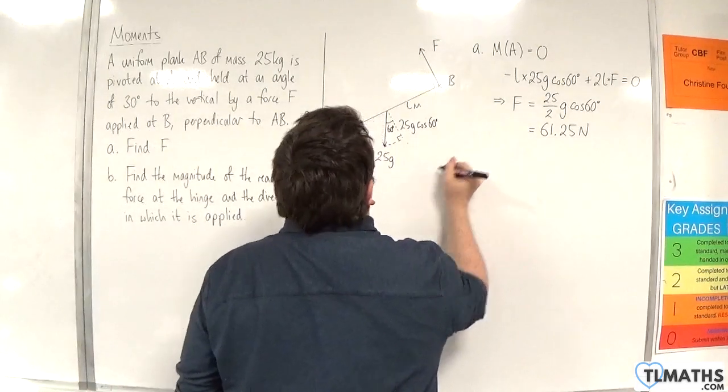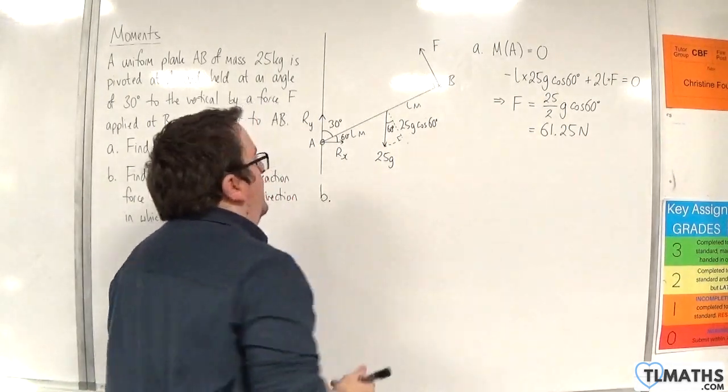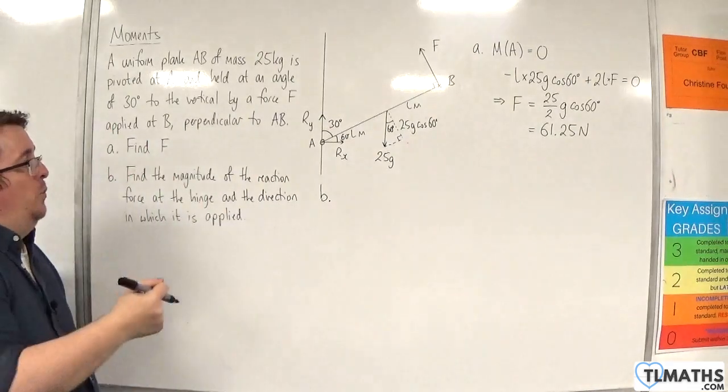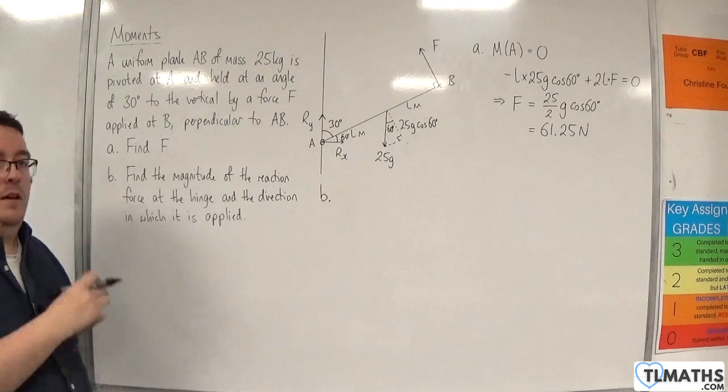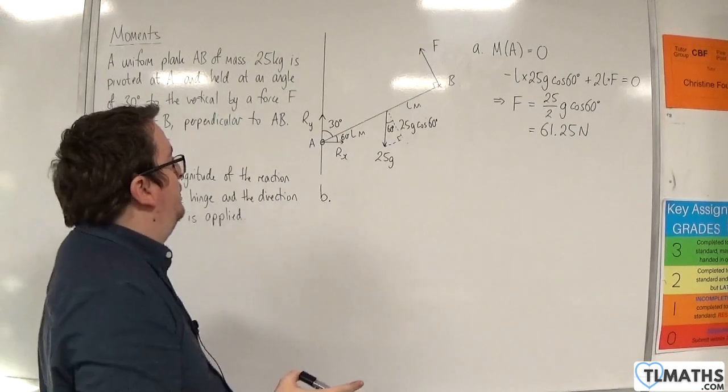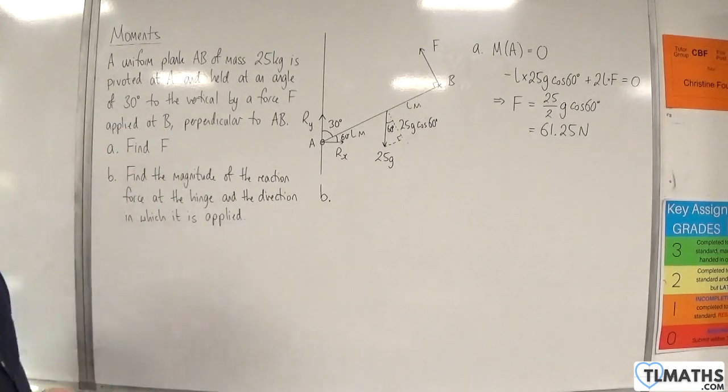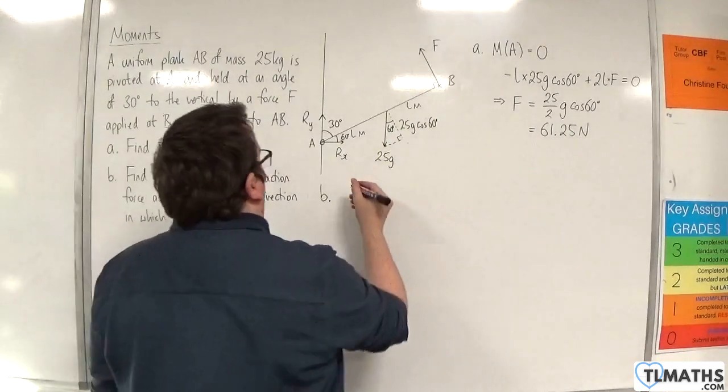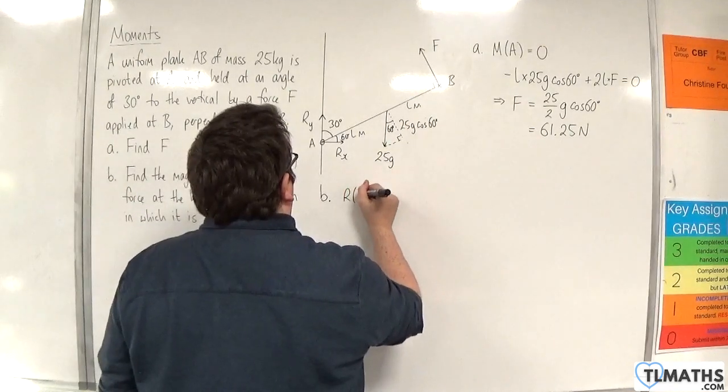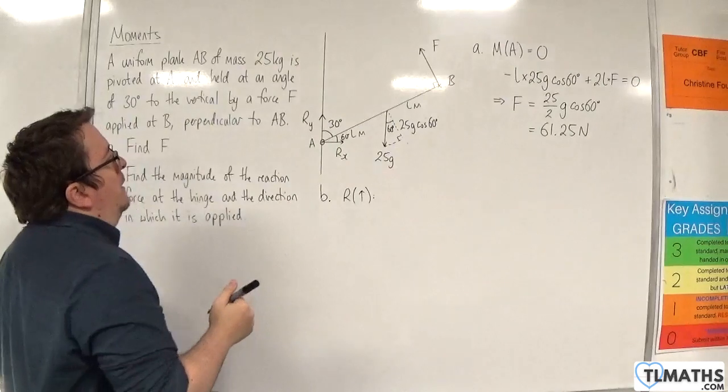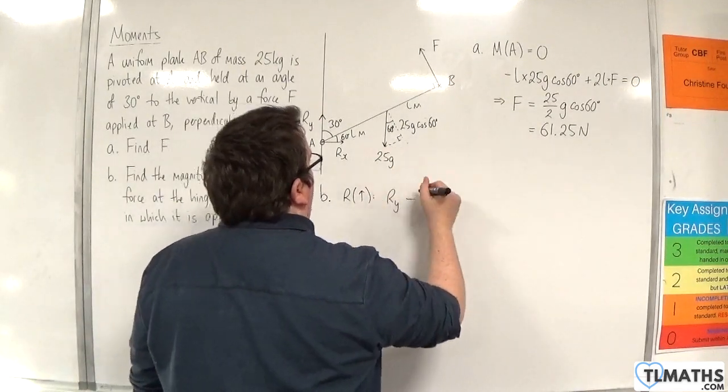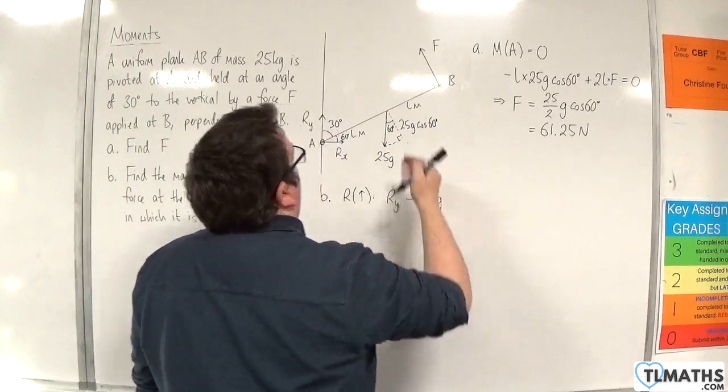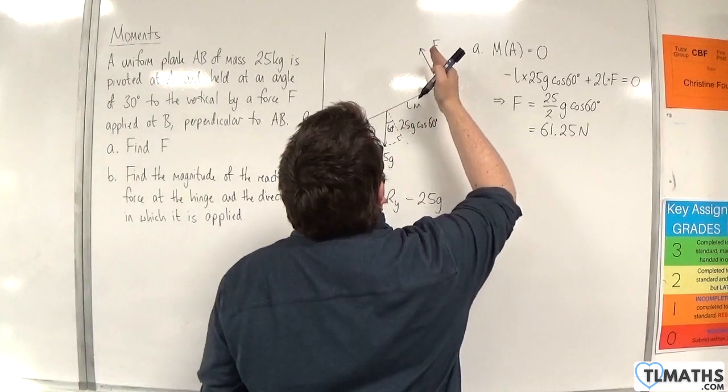Part B. This is the bit where I'm going to do it two ways. First way, I'm going to go about it using resolving forces. Let's resolve vertically first. We have R_Y, take away the 25G, and then we need the vertical component of F.